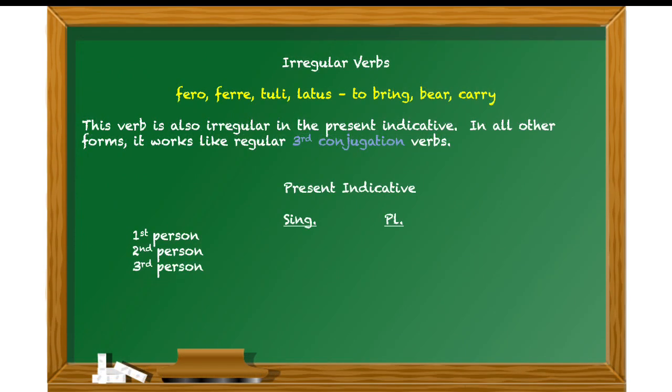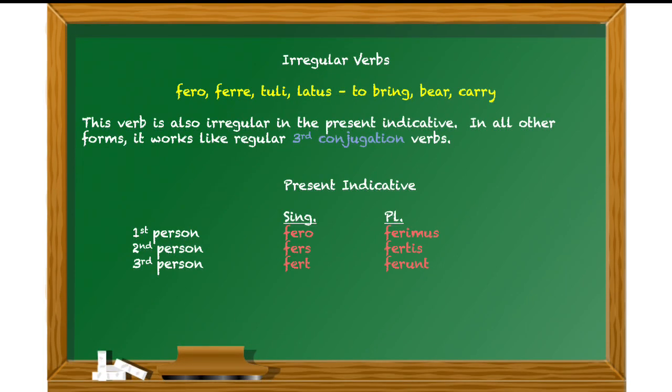So once again, we set up our little chart with the present indicative. And here we go. Fero, fers, fert. And right away, you may feel like something's missing there. We would expect there to be a vowel between the R and the S or the R and the T. And it's just not there. So that's what makes this irregular. Ferimus, fertis, ferunt.